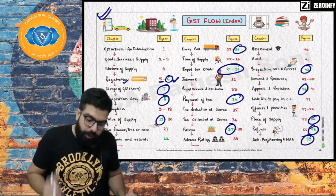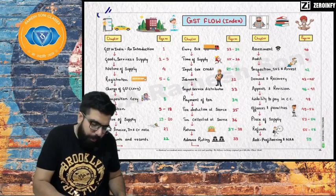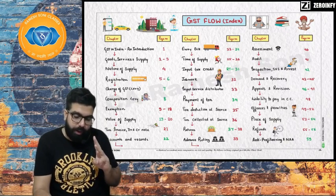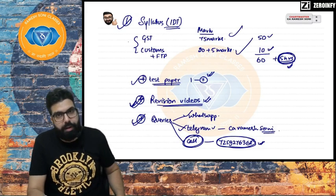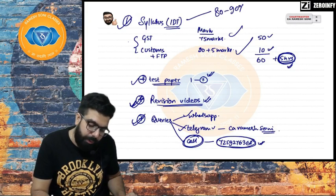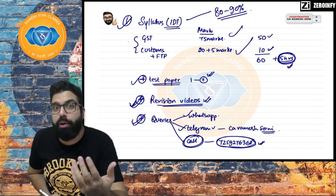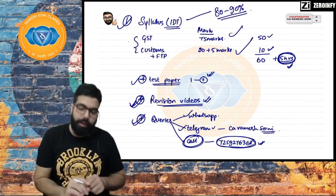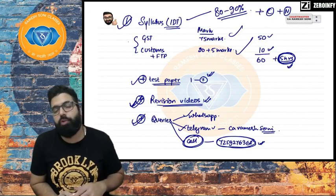Let's start the class. First topic is GST — we'll start with GST, then move to Customs, and on the last day cover FTP. The first thing when learning GST is to understand what is 'goods' and what is 'services' — because Goods and Services Tax. In law, definitions are given in Section 2(52) for goods and Section 2(102) for services.